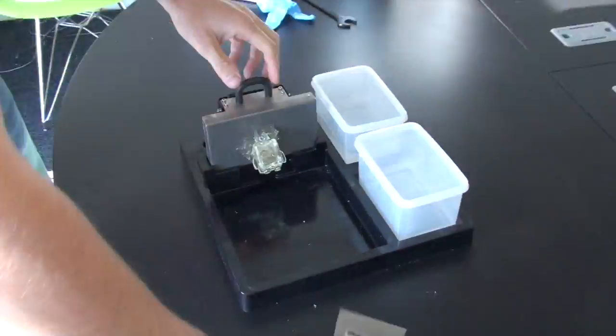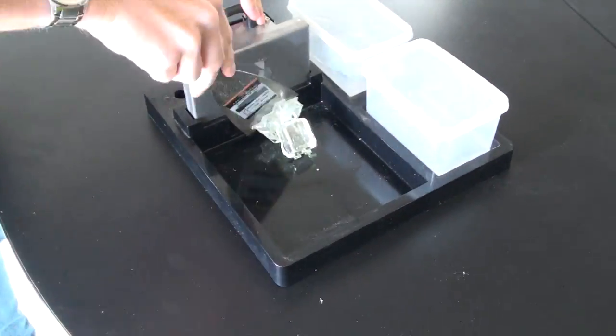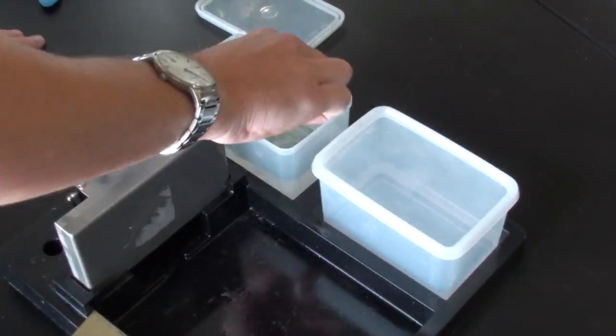Now we're going to take the build plate off, take it over to our tray here and scrape it off the build plate. It's a little hard to come off.